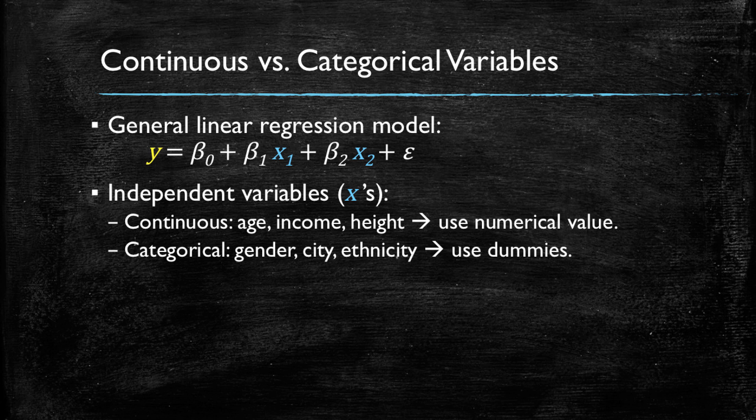We could also have categorical variables that determine the customer's product preference, for instance gender, city or ethnicity, and we had learned that we could use dummy variables to represent these.